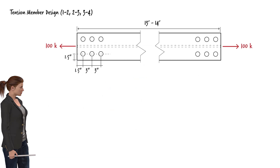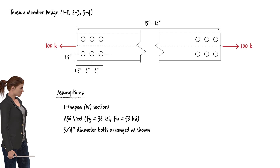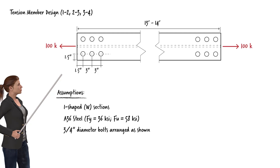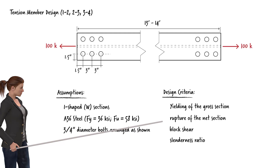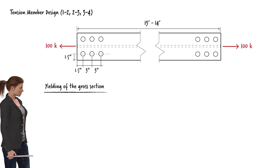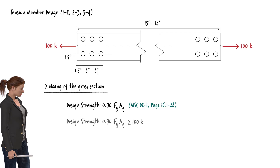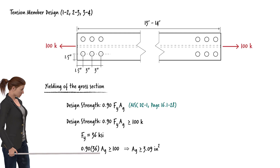To facilitate the design of truss members for tension, let's make a few assumptions. We are going to use standard W shapes with A36 grade steel. The end connections for each member use at least 2 rows of bolts with 3 bolts in each row, with the assumed bolt spacings shown. We shall use bolts having ¾ inch diameter. We can use the yield criteria to determine the required gross cross-sectional area. For A36 steel, Fy is 36 ksi. Therefore, the minimum required gross cross-sectional area equals 3.09 square inches.